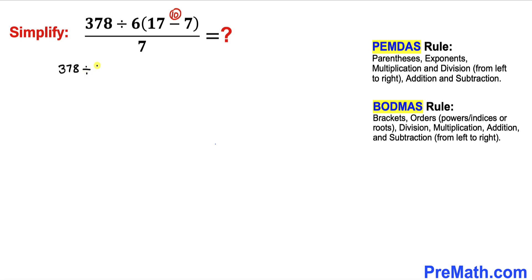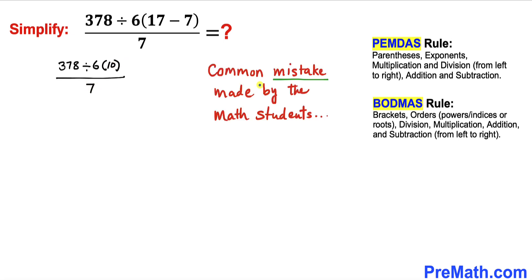Here's the common and silly mistake that most students make: they do the multiplication first—6 times 10 is 60—and then after that they do the division. This is the wrong approach.